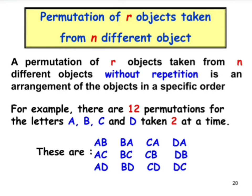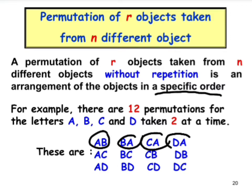Now let's look at a permutation of r objects taken from n different objects. The permutation of r objects taken from n objects without repetition is an arrangement of the objects in a specific order. For example, there are 12 permutations for the letters A, B, C, and D taken two at a time — we have AB, AC, AD, and so on.